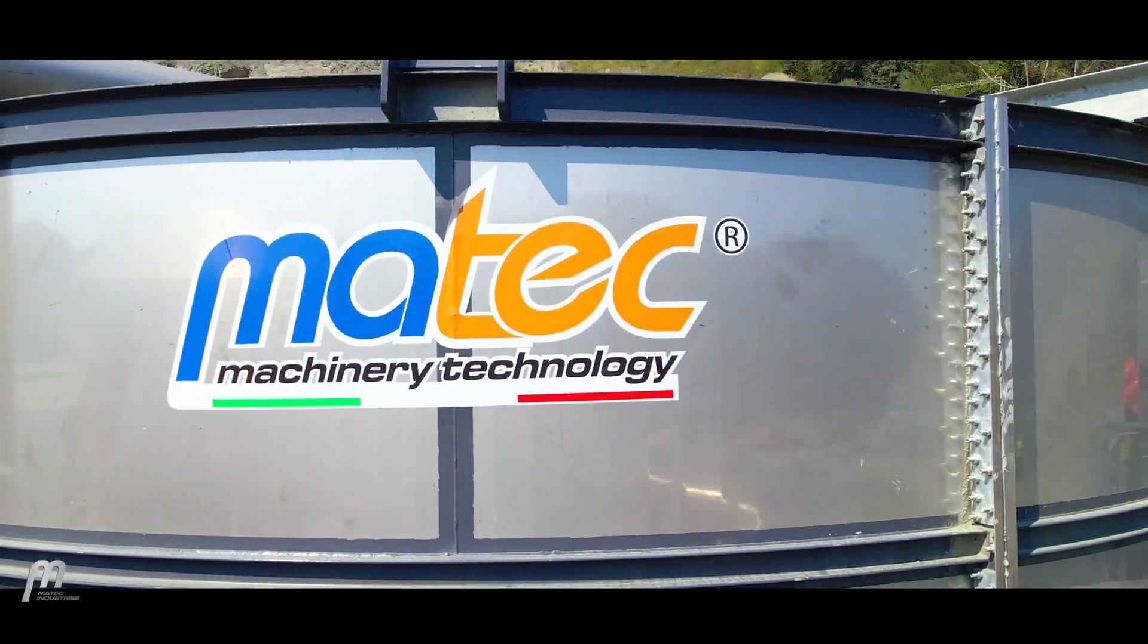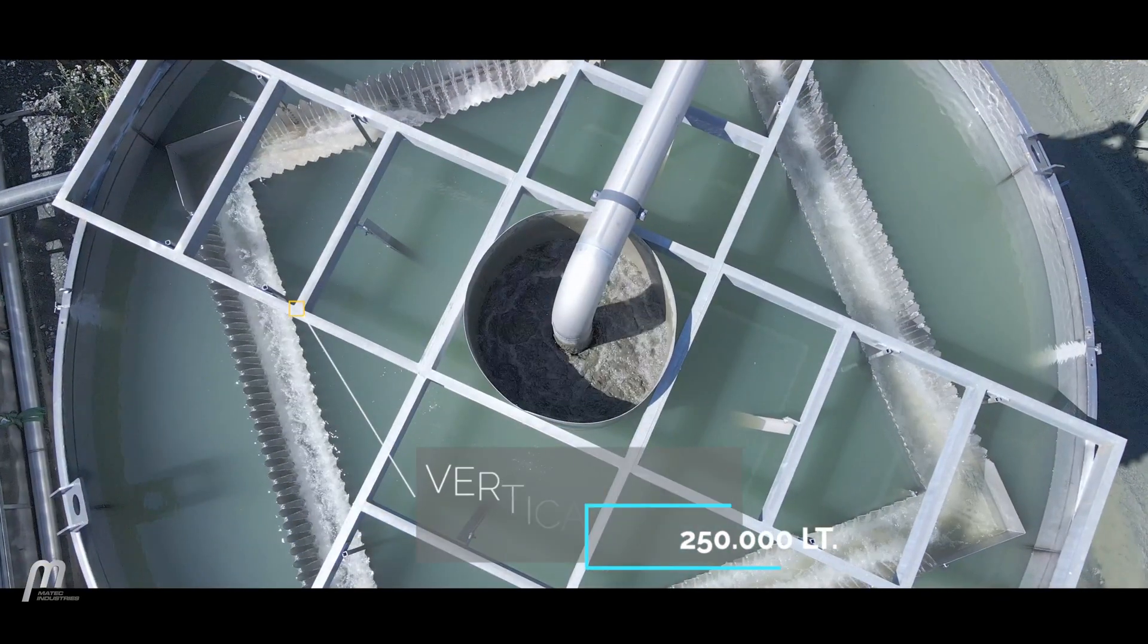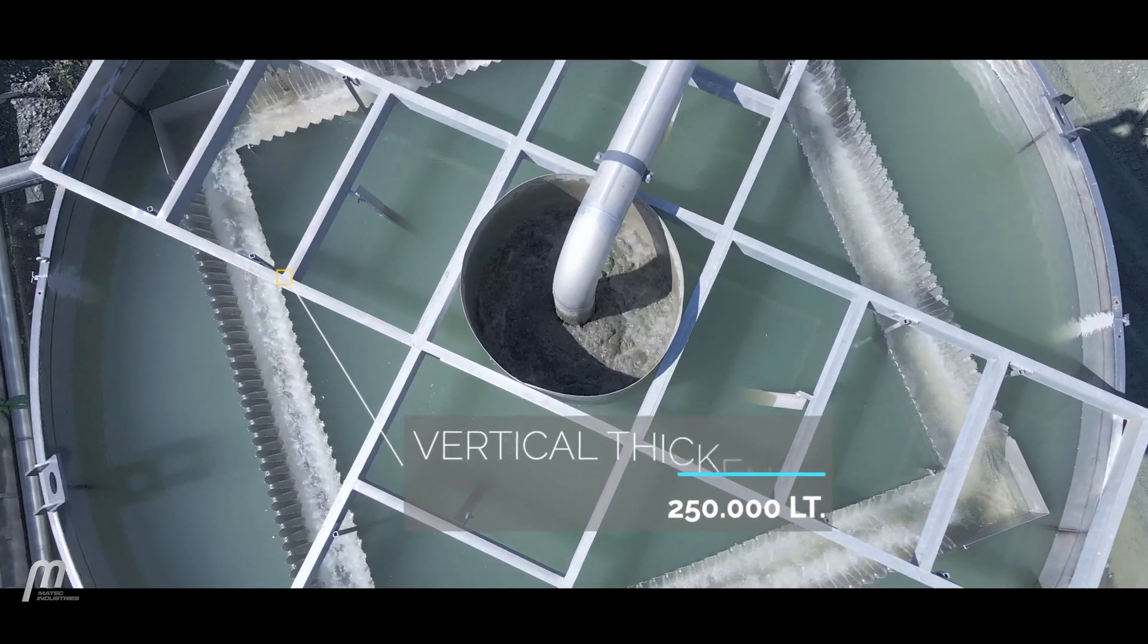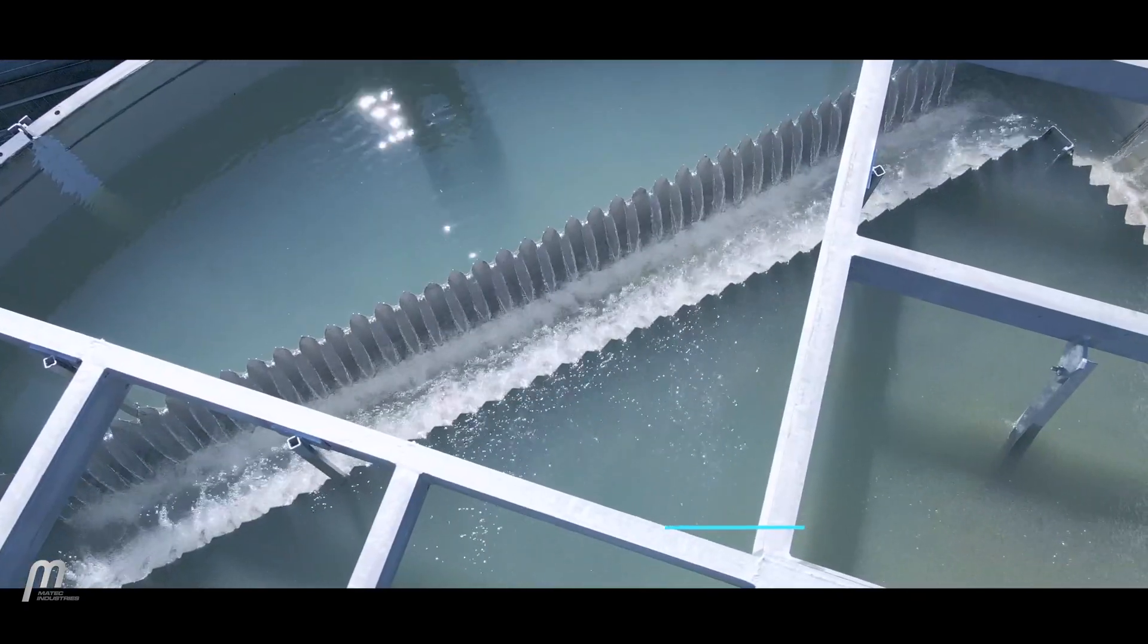Clarified water rises towards the top of the decanter and is collected in the perimetral channel, located in the upper part of the thickener.